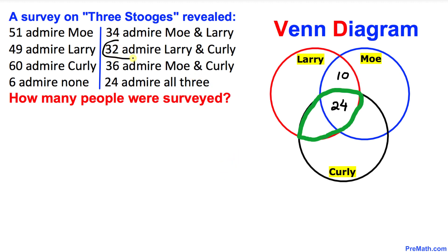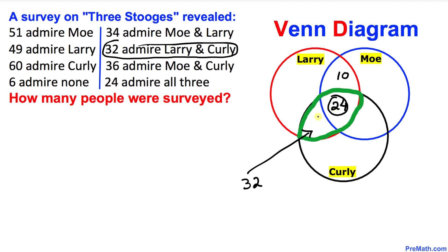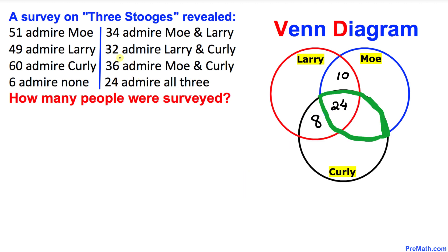Let's focus on the 32 that admire Larry and Curly. In that region we already have 24, so we add 8 more — 8 plus 24 gives us 32.